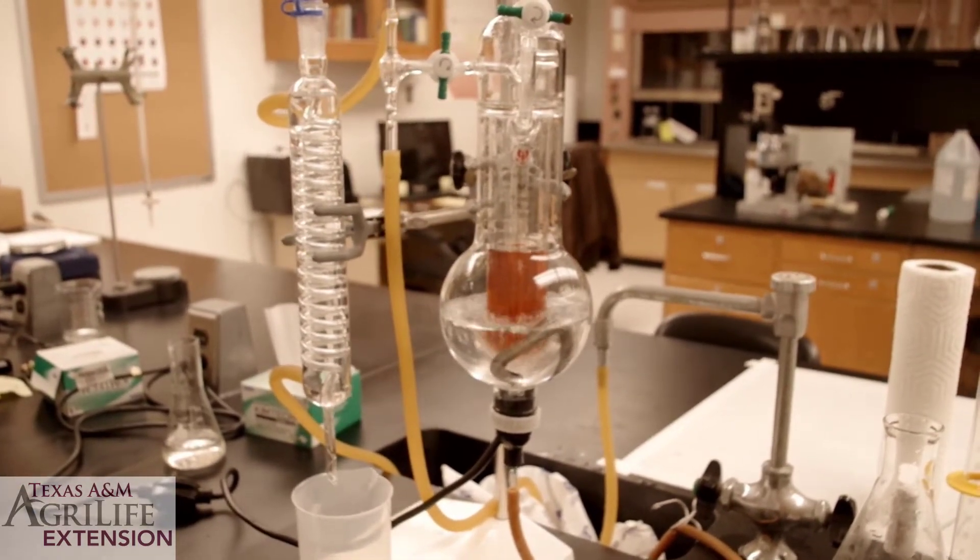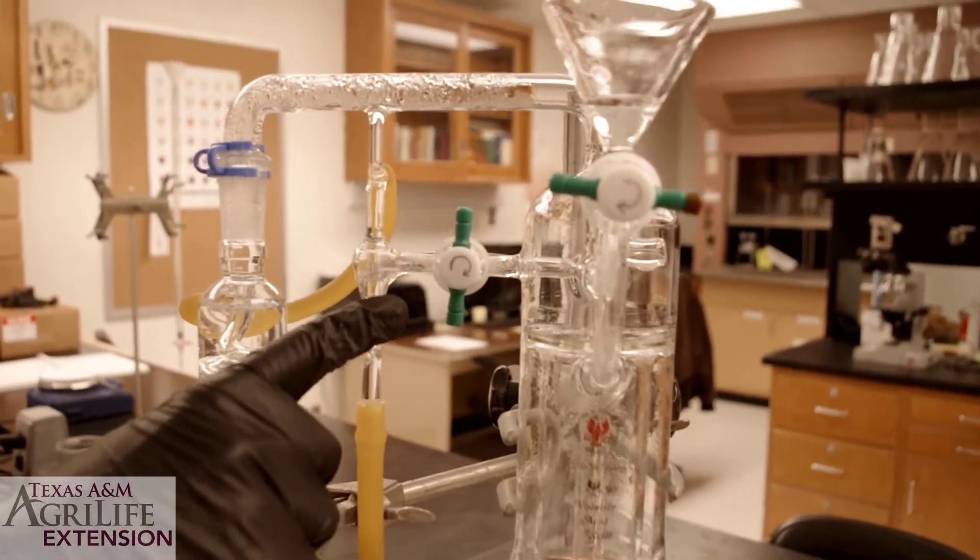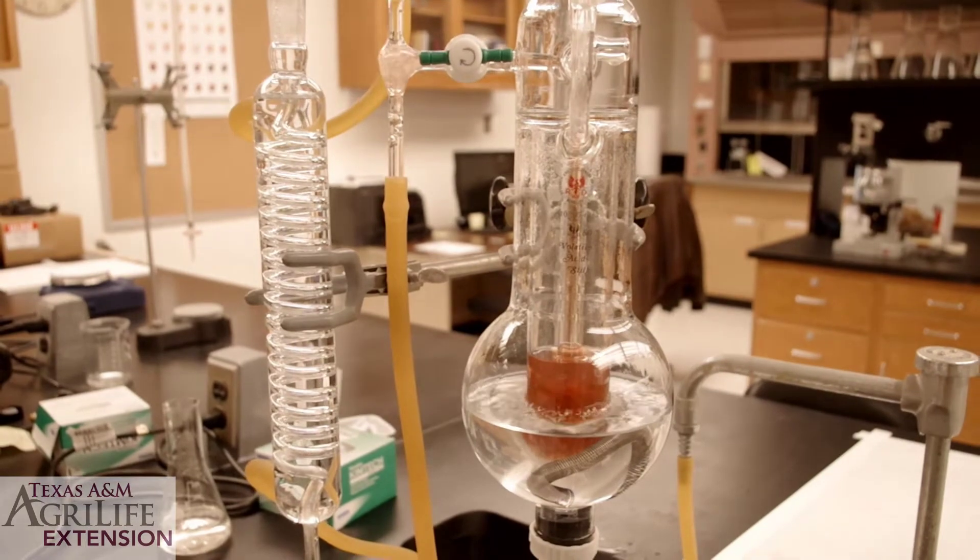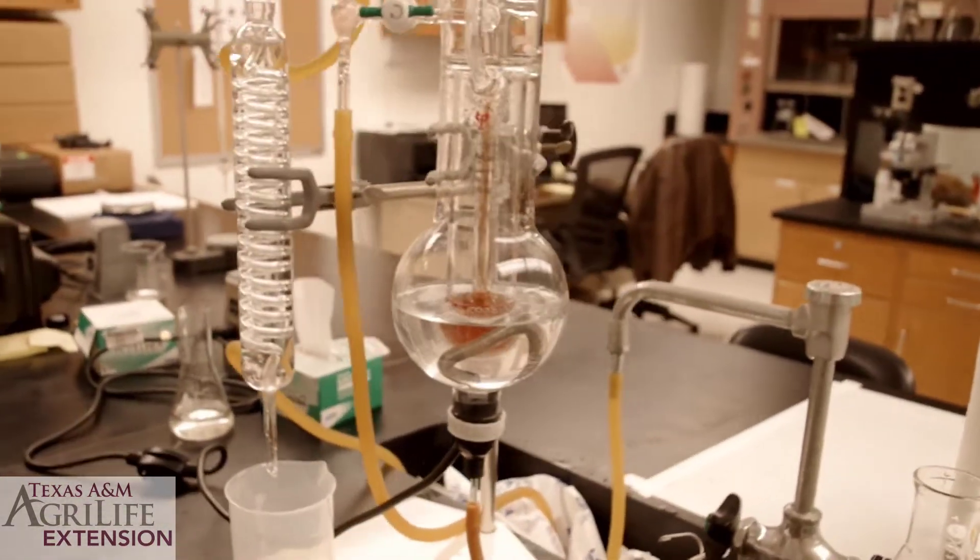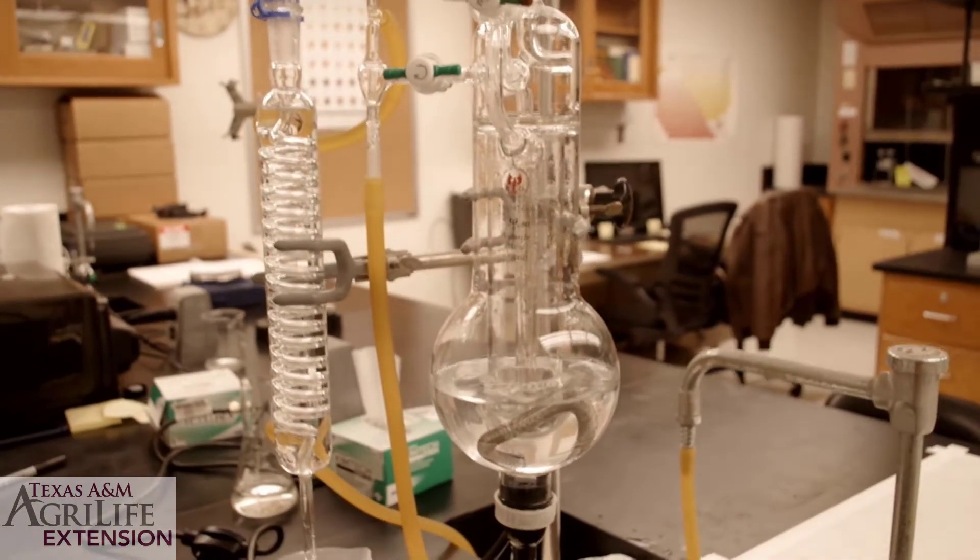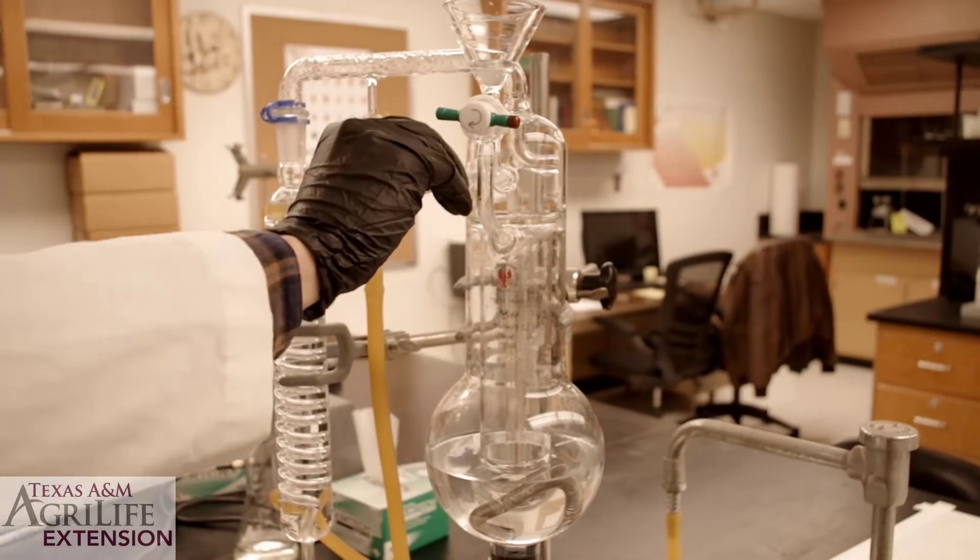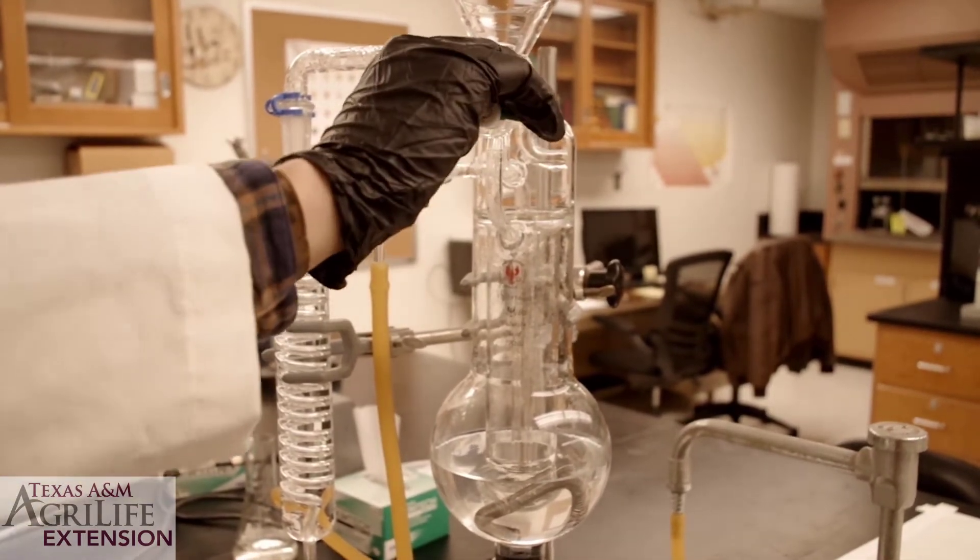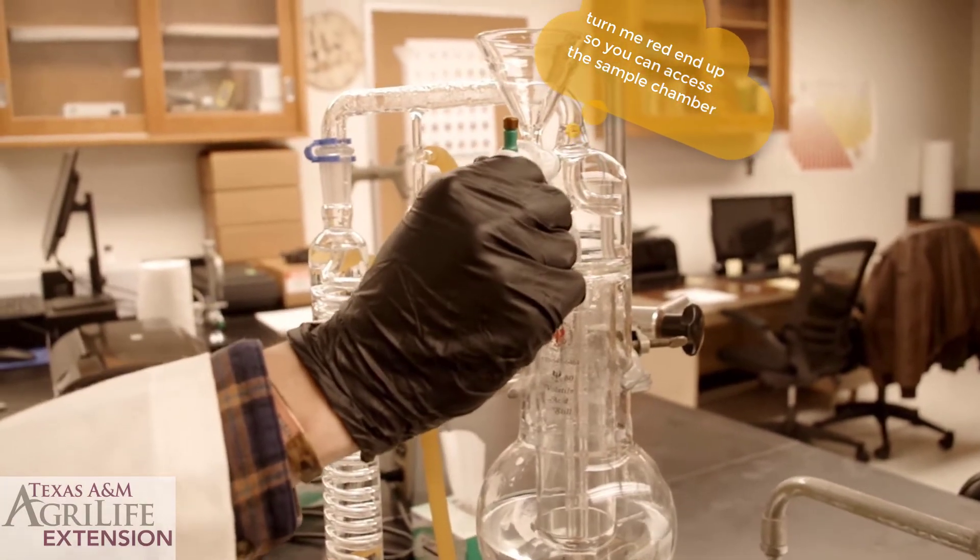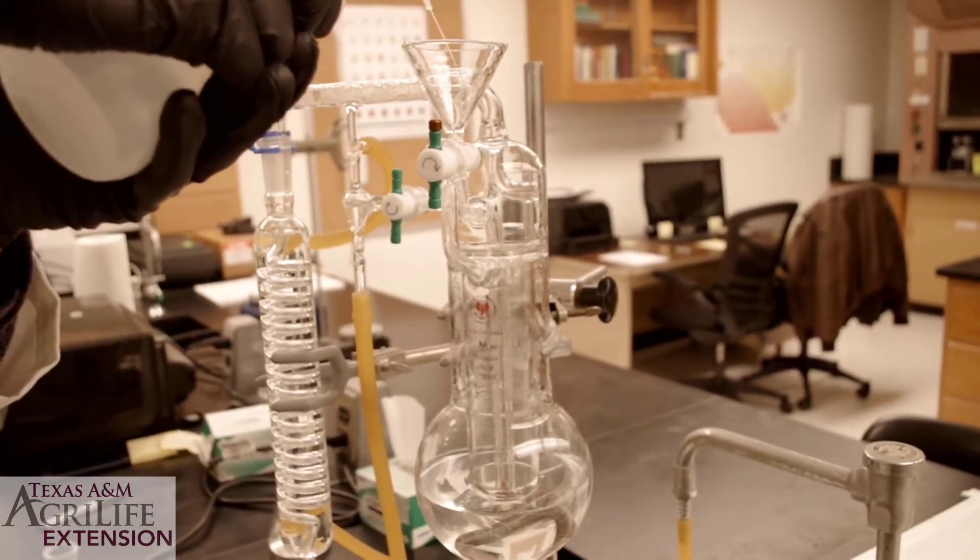It is now time to evacuate the sample. Turn the middle stopcock to the horizontal position. The sample will be evacuated through the middle hose into the sink. Time now to clean the sample chamber. With the middle stopcock in the vertical position, add distilled water to your sample chamber. Then evacuate. Repeat the process three times.